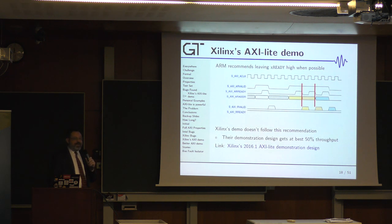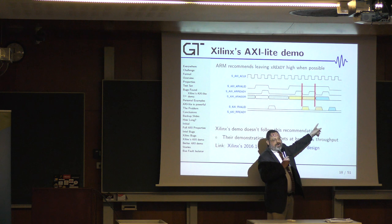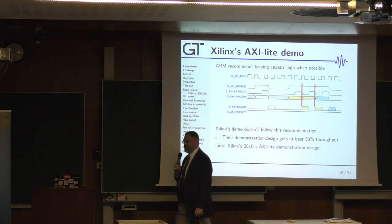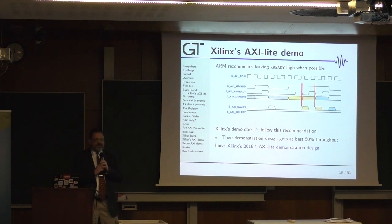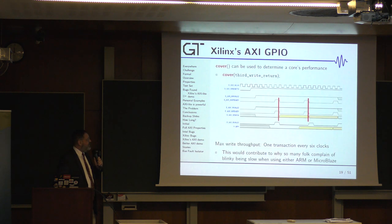Let's take a look at some cover traces. So you can use cover to ask the question of how fast does this core work? So here we come back to Xilinx's AXI Lite demo, and you can see the fastest this core can work, at best, one transaction every two clocks. That's a 50% throughput. That's really not high speed. AXI is a high speed bus. This is not high speed.